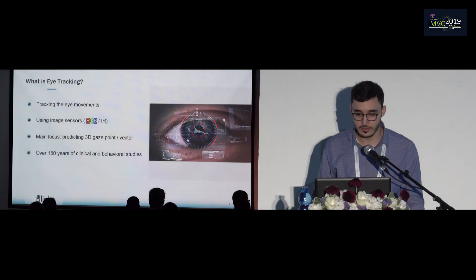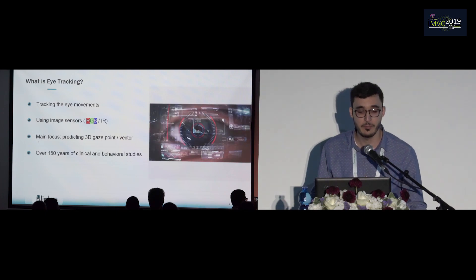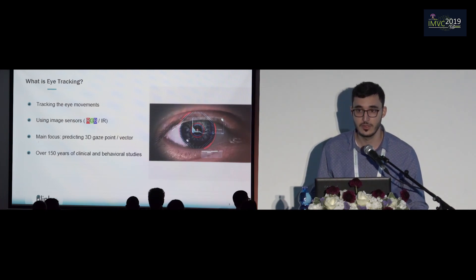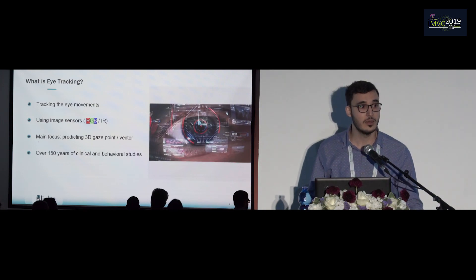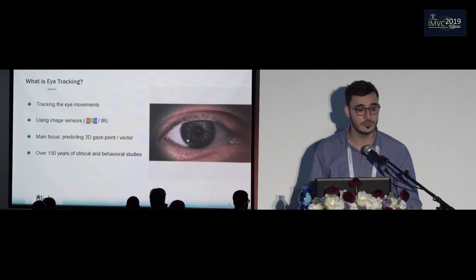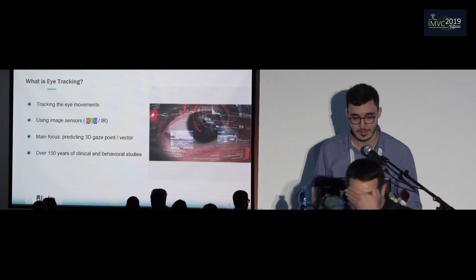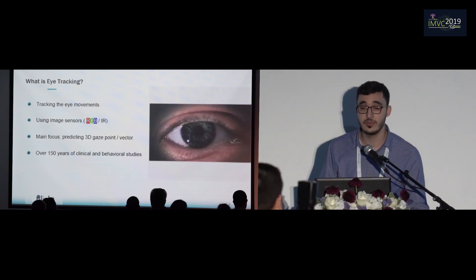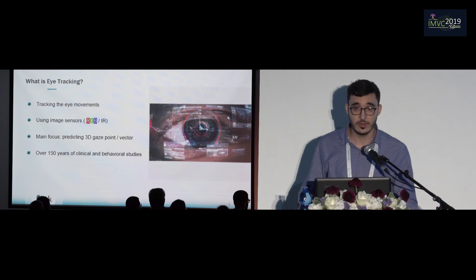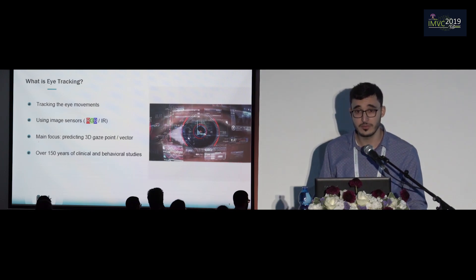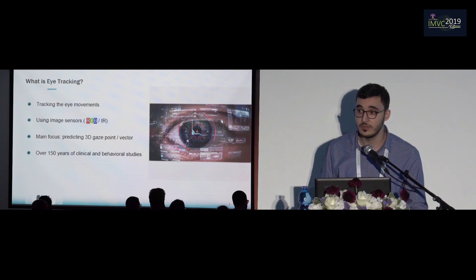So what is eye-tracking? As you can see in the video, we want to track the eye movements and do so by capturing the eye using image sensors. Today we'll focus on RGB sensors, although it can also be done using active IR. The main focus will be to predict the gaze point or the gaze vector. The gaze point is the point in space that you are fixating at, and the gaze vector is a vector connecting your eye location and the gaze point. This is a very old research topic mainly focused on psychology and medical studies, but today we want to see what we can do with this technology in modern applications.